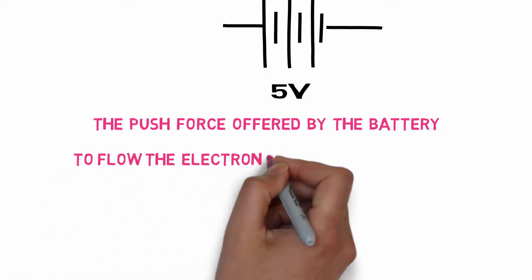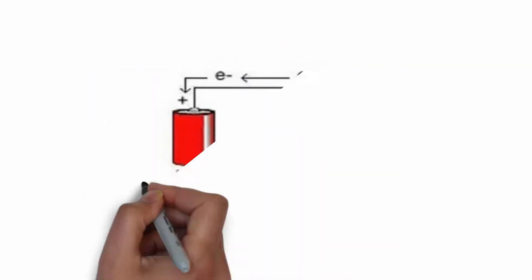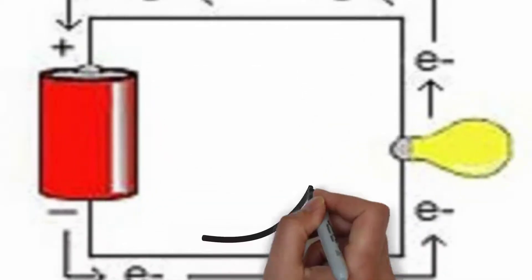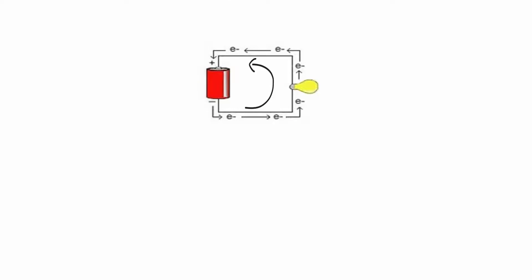The push force offered by the battery to flow the electrons in the circuit is 5 volts. This is also 5 joules per coulomb. Consider this battery and circuit. The electrons will move from negative side to positive side of the battery.